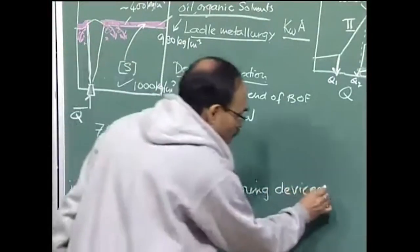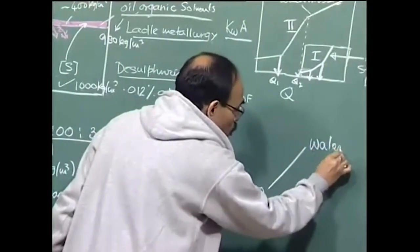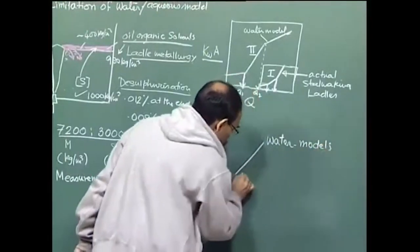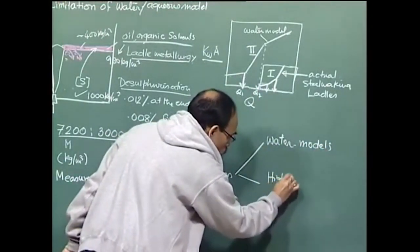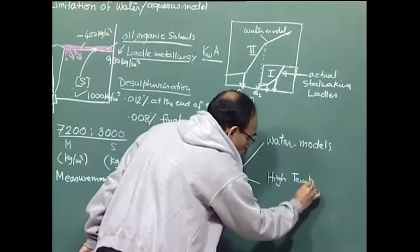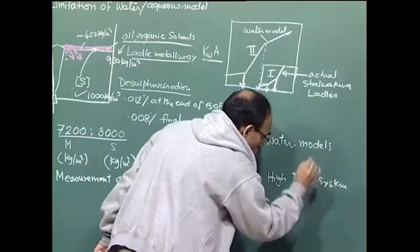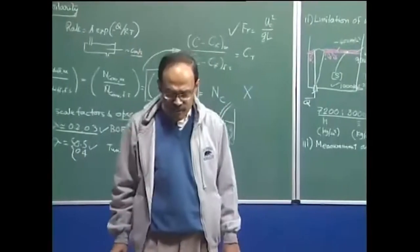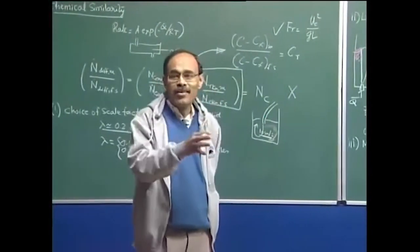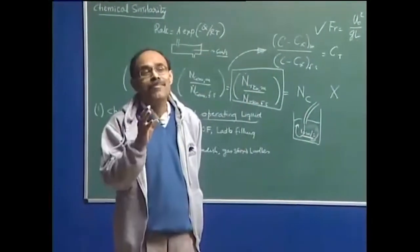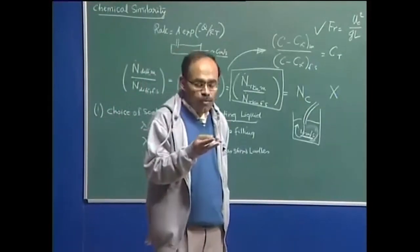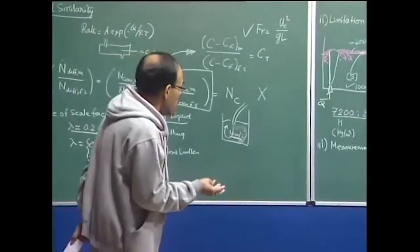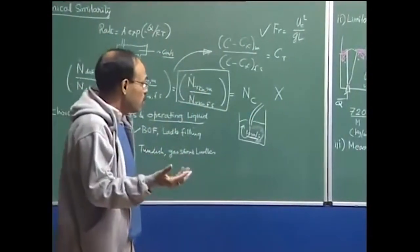When talking about measurements and measuring devices, there will be one set of observations, equipment, and techniques used in water models and another set used in high temperature systems. In steel making systems we measure phases — whether it is slag or metal — temperature, mass flow rate, activities or concentrations, and weight through a load cell. There are many measurements carried out routinely in steel plants.